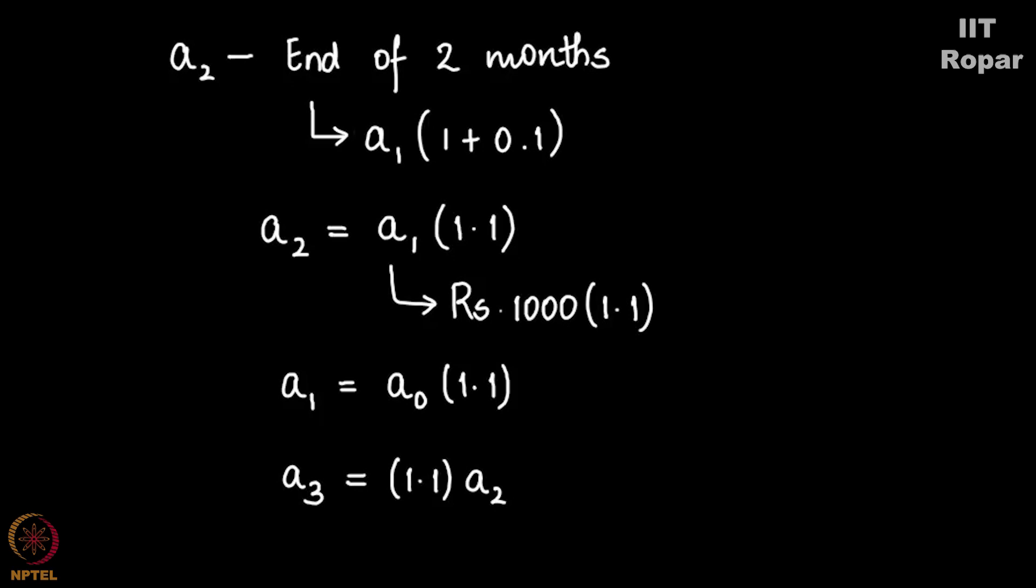A1 will be A0 times 1.1 and A2 becomes A1 times 1.1 and A3 becomes A2 times 1.1. If you plug in and note you will observe that A3 is indeed 1.1 times A2, but in place of A2 you can remove and then write 1.1 times A1, in place of A1 you can write again 1.1 times A0, so you get 1.1 cube times A0.